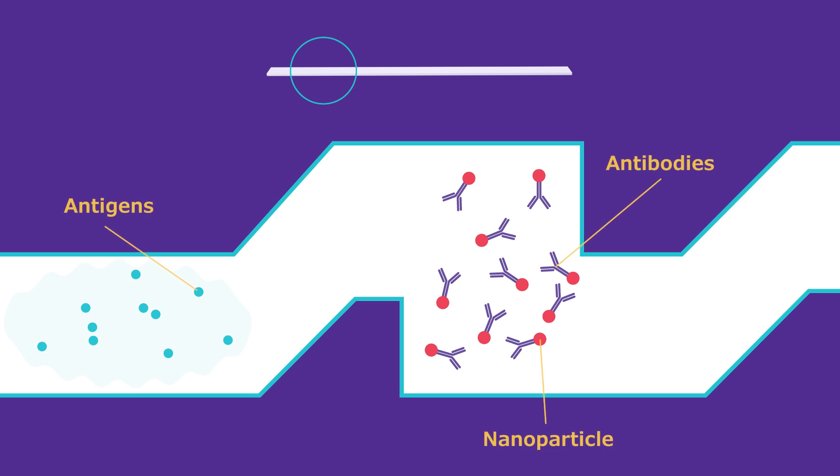It then flows by capillary action down the strip. The sample first flows through the conjugate pad that is laden with antibody and nanoparticle constructs.